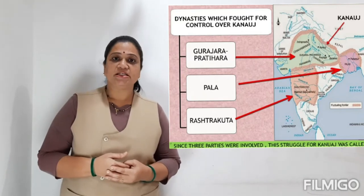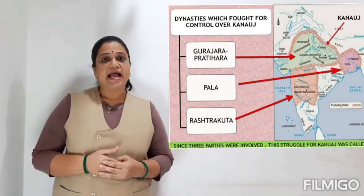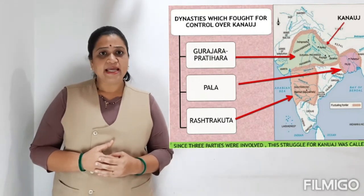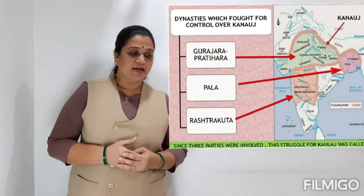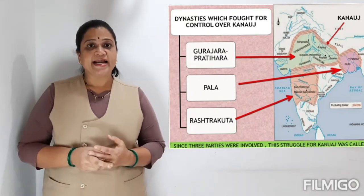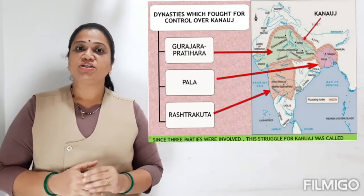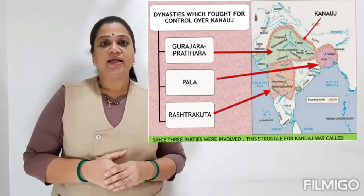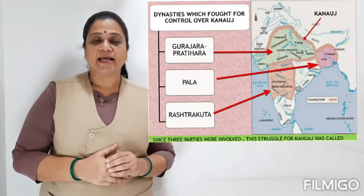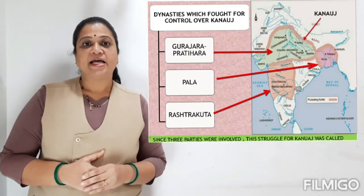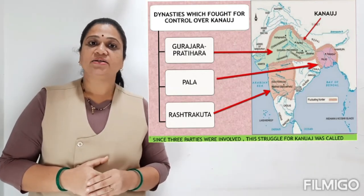The first example is the Three-Party Struggle for Kannauj. Kannauj was a city in Uttar Pradesh in the Ganga valley. The land of Kannauj was very fertile and rich in agricultural resources. The three ruling dynasties — Gujara Pratihara, Rashtrakuta, and Pala — were fighting among themselves to gain control over Kannauj. Historians call this the Three-Party Struggle.